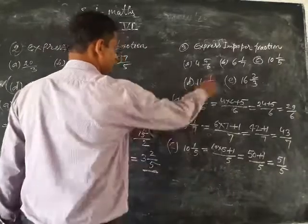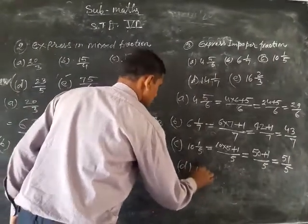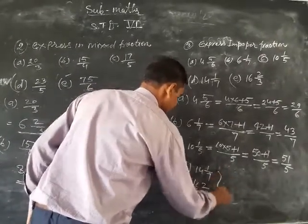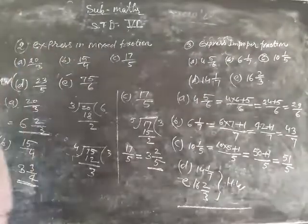This is parts d and e homework. Part d: 14 and 1 upon 7. Part e: 16 and 2 upon 3. This is your homework. That's all, thank you.